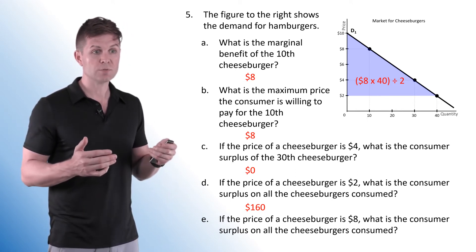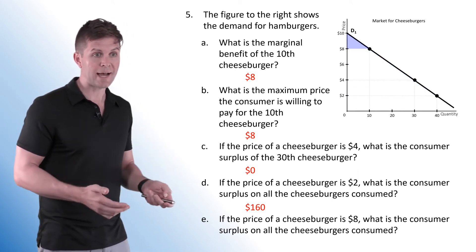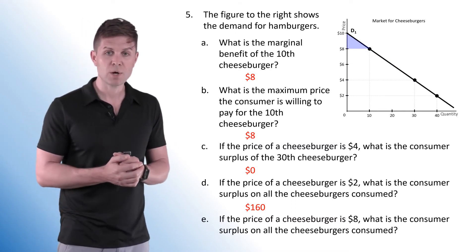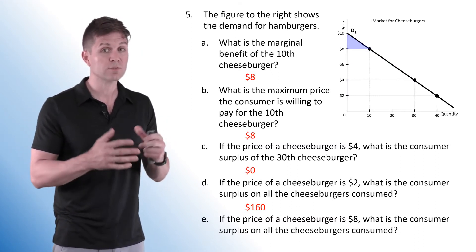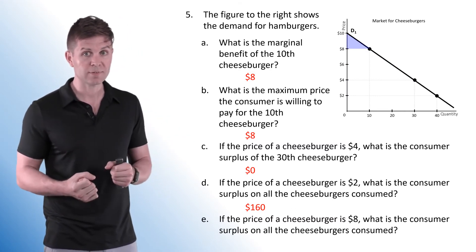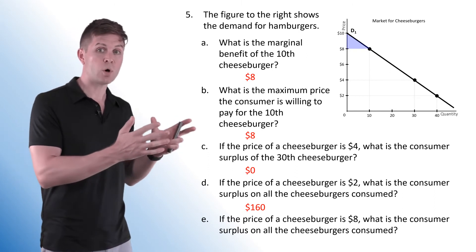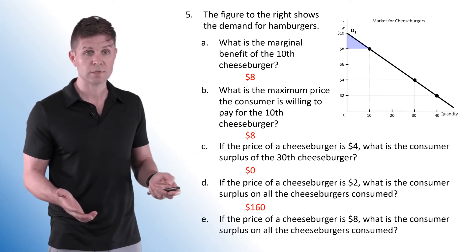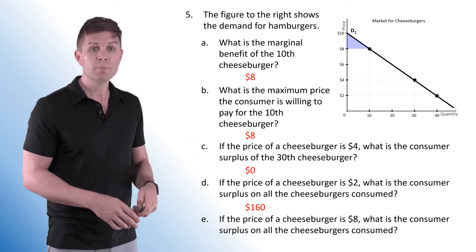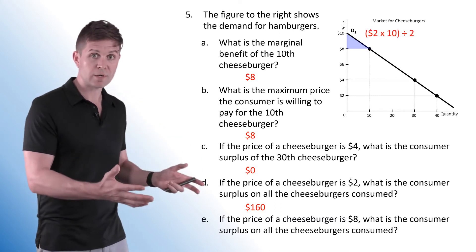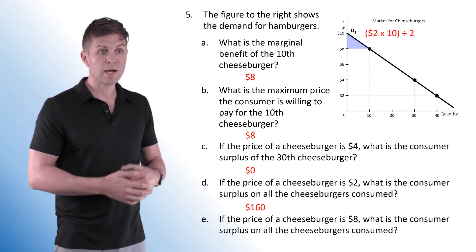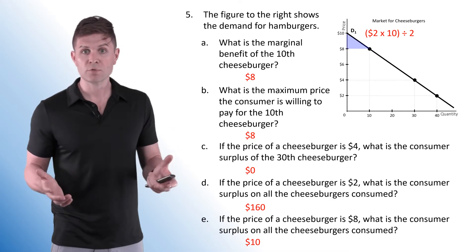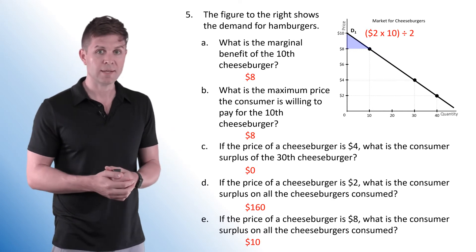If the price of a cheeseburger is $8, the area is much smaller. There are still people getting extra satisfaction, but it's a much smaller market — only 10 cheeseburgers are consumed. We can still find the area of that triangle: 2 times 10 divided by 2 gives us a consumer surplus of $10.